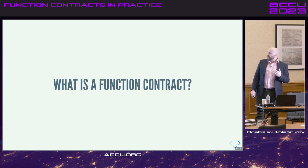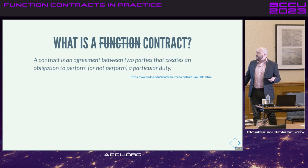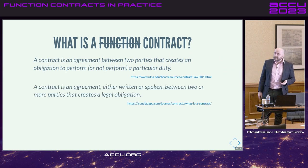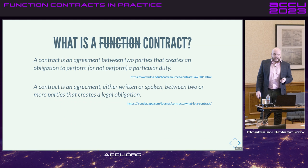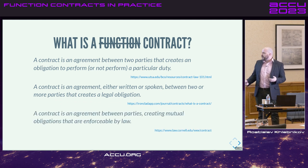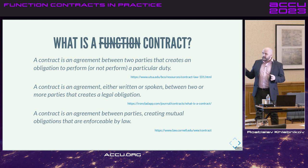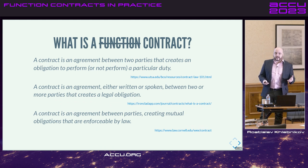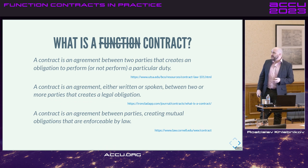Before I start talking about what is a function contract, let's look at what is just a contract in the real world. A contract is an agreement between two parties that creates obligation to perform or not perform a particular duty. A contract is an agreement, either written or spoken, between two or more parties that creates a legal obligation. A contract is an agreement between parties creating mutual obligations that are enforceable by law. You might note that all those definitions, even though slightly different, share a common thread: there are at least two parties interacting, and there are mutual obligations between them.